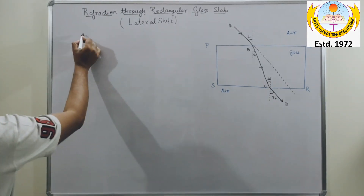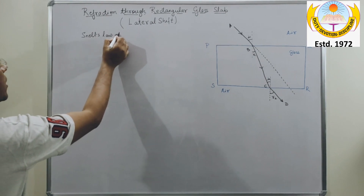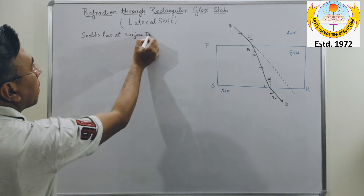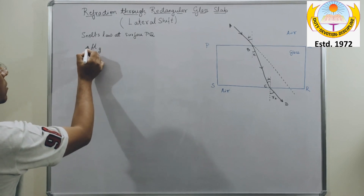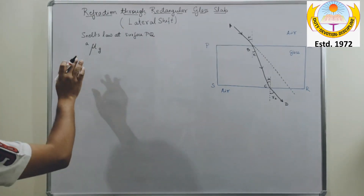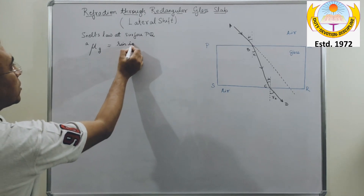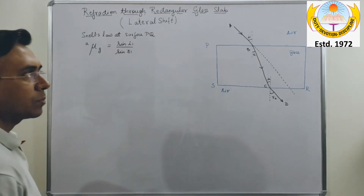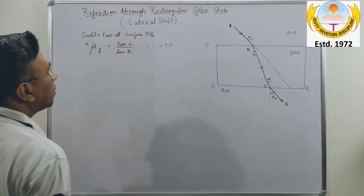Applying Snell's law at surface PQ: since light is traveling from air into glass, we write the refractive index of glass with respect to air. Snell's law gives: A_mu_G = sin I1 / sin R1. This is expression number 1.